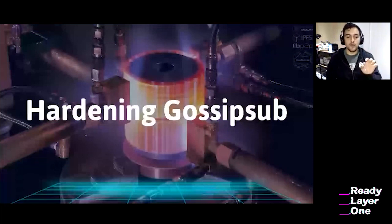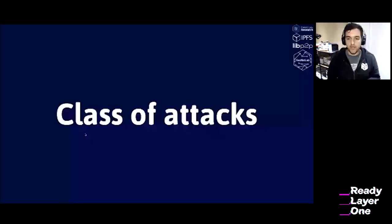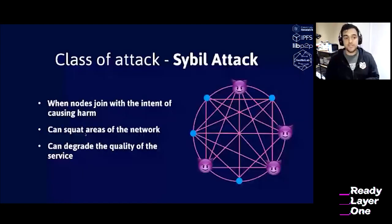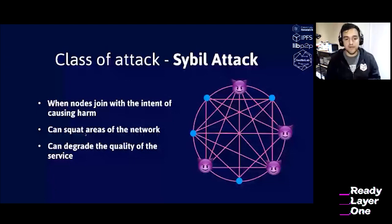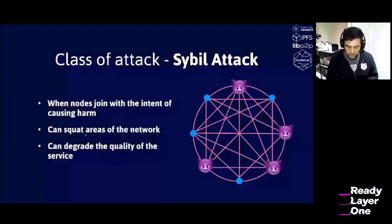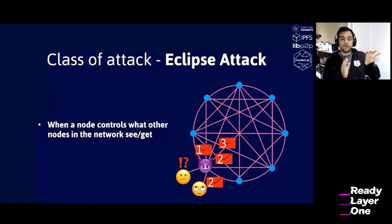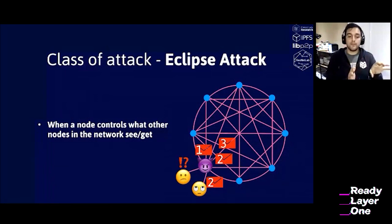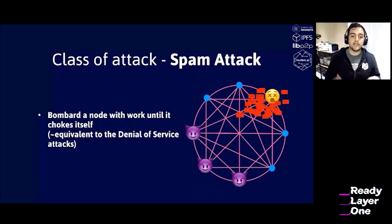When we were hardening GossipSub we studied several classes of attacks. The first is the Sybil attack — when someone creates fake identities, multiple malicious peers, to either squat areas of the network or put peers in specific locations to degrade network quality. Then there is the eclipse attack, where a node positions itself in front of all the nodes it wants to attack so it can control the messages those nodes see and get. A third class is spam attacks, where malicious nodes abuse the network to attack a specific node until it chokes on itself, causing a denial of service.